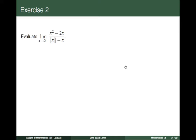Number 2: evaluate the limit of the quotient x squared minus 2x divided by the greatest integer of x minus x as x approaches 2 from the right side.